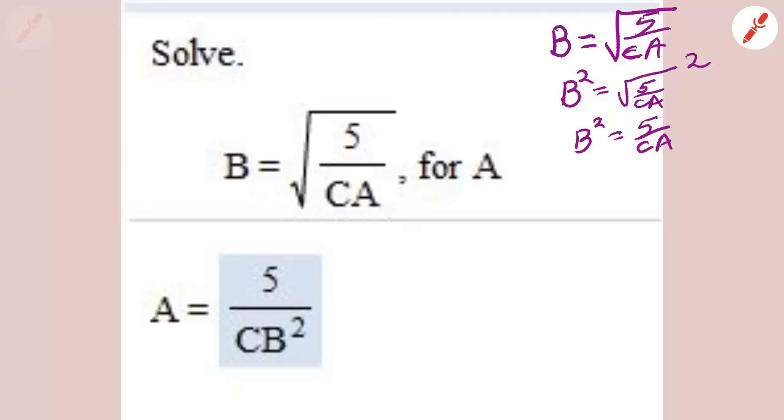Now I'm going to multiply both sides by A in order to cancel the A out over here because it's underneath, it's in the denominator. It's doing me no good at all. So I cancel out the A's and now I have AB squared equals 5 over C.